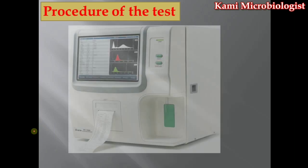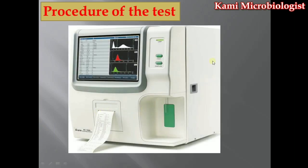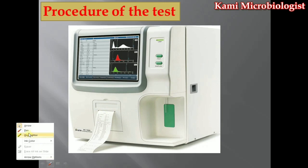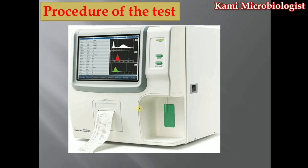For MCHC identification, we need blood and a hematology analyzer machine. We remove the cap from the EDTA tube, then dip the needle into the blood and press the button. Once we press the button, the machine takes a small amount of blood, counts all the cells, and gives you a report in about 5 minutes.